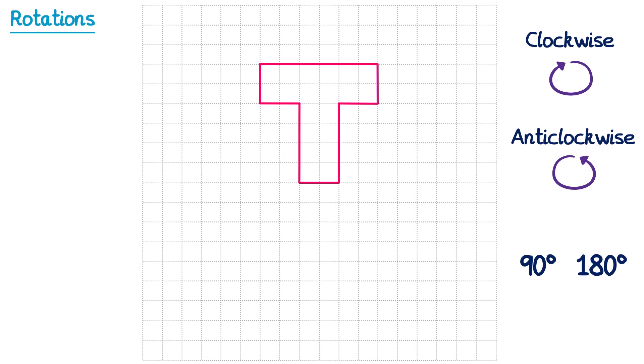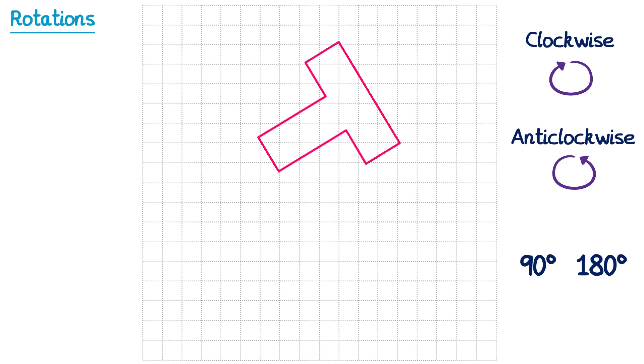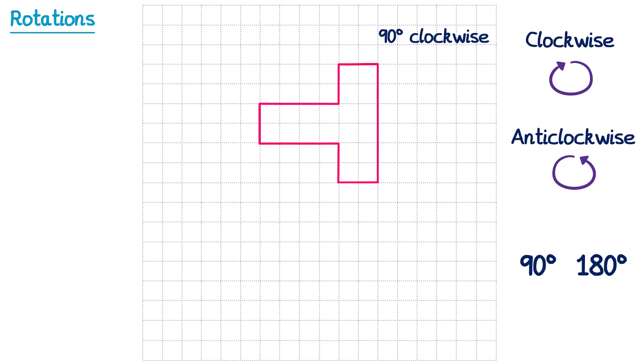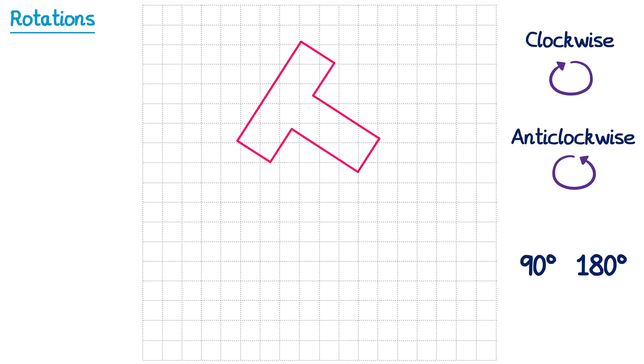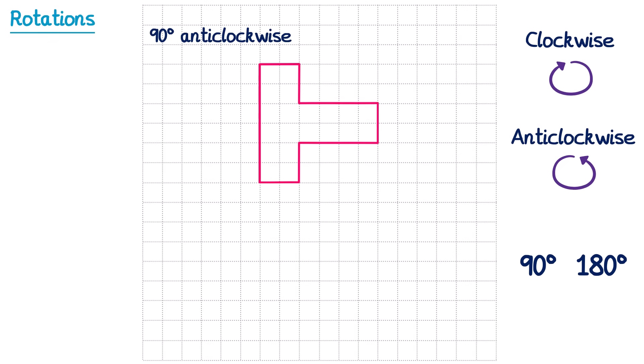So if we were to rotate this shape 90 degrees clockwise, it would go 90 degrees, or one quarter of a turn, in the direction that a clock hand moves, so it would look something like this. If instead we were to go 90 degrees anticlockwise, it would go one quarter of a turn in the opposite direction, so it would look like this.